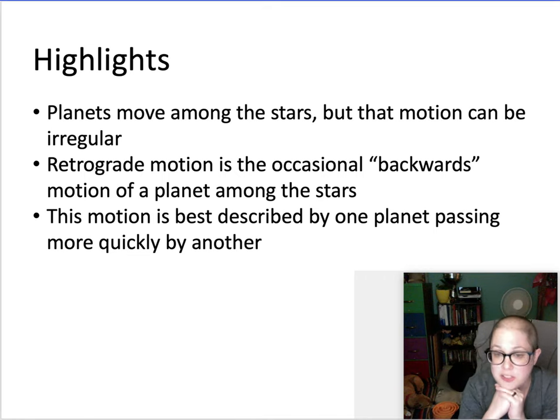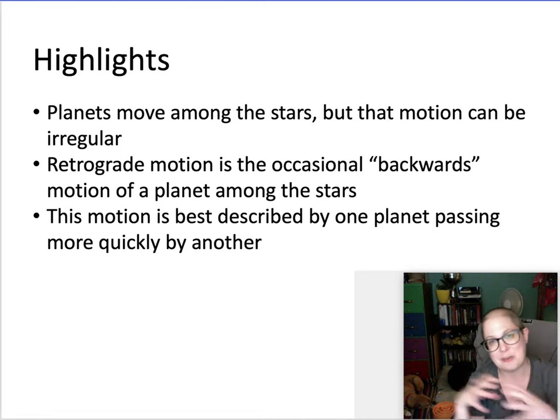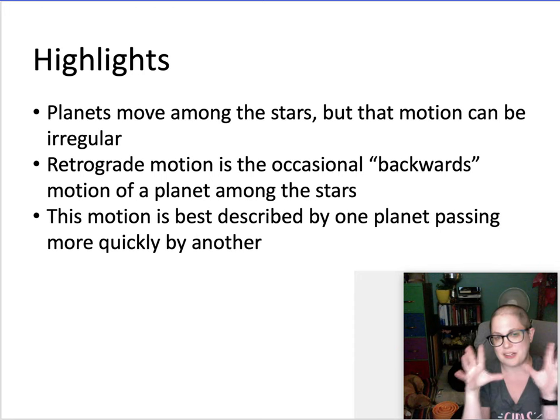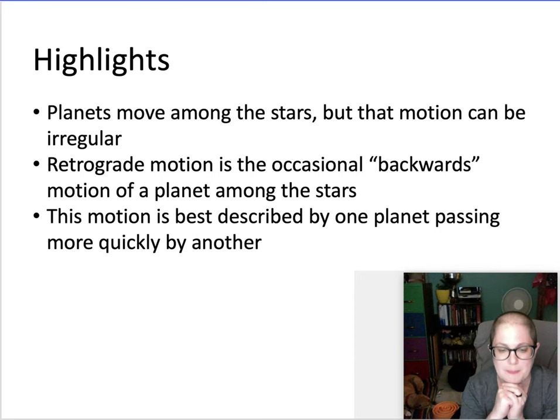It's best explained by one planet passing more quickly by the other, particularly earth passing more quickly than the planets further out such as Mars. There's also retrograde motion for Venus and Mercury which are inside the earth's orbit, but that's a little different. I don't want to get too much into that. So that is our example of how astronomy in particular helped to revolutionize the practice of science and humanity's understanding of its place in the universe.